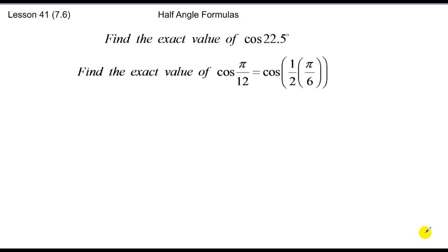To this point we've dealt with sum and difference formulas, and we've dealt with double angle formulas. Today it's the half angle formula, and we use these to find exact values of non-unit circle values that can be expressed as half of a known unit circle value.